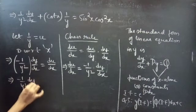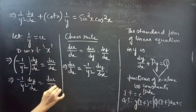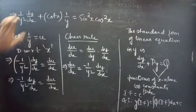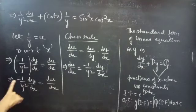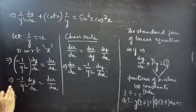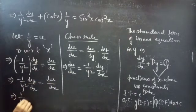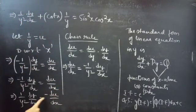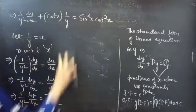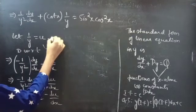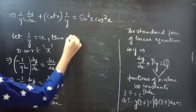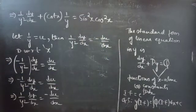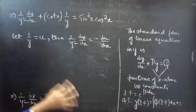So −(1/y²)·(dy/dx) equals du/dx, which means (1/y²)·(dy/dx) equals −du/dx. When u = 1/y, then (1/y²)·(dy/dx) equals −du/dx. So the equation becomes: −du/dx plus cot(x)·u equals sin²(x)·cos²(x).